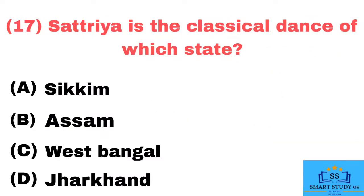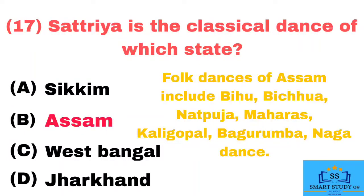Q17. Satriya is the classical dance of which state? Answer: Assam. Folk dances of Assam include Bihu, Bichua, Natpuja, Maharas, Kaligopal, Bhagurumba, and Nagar dance.